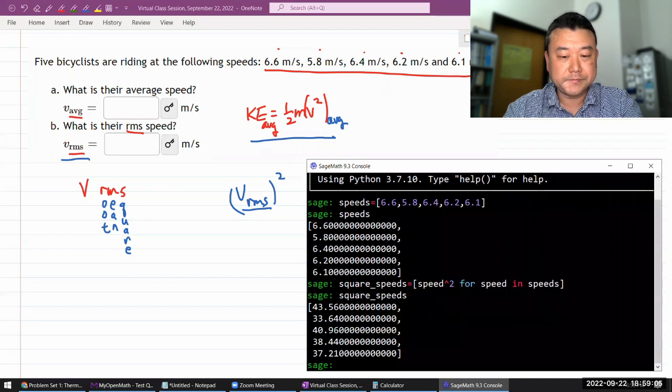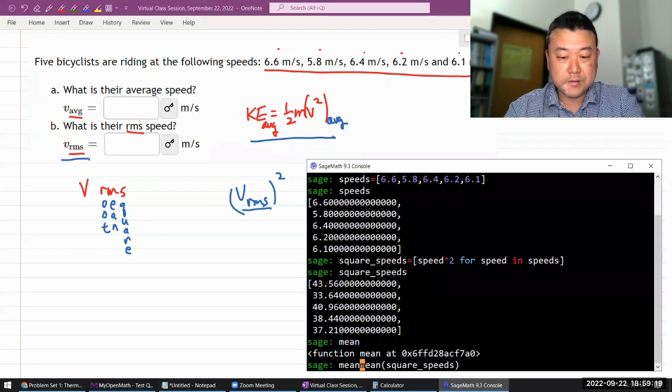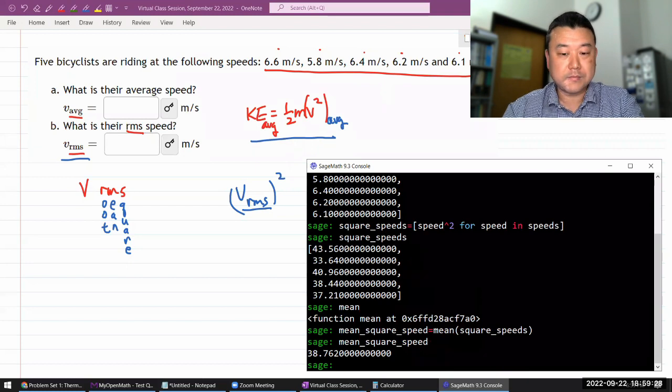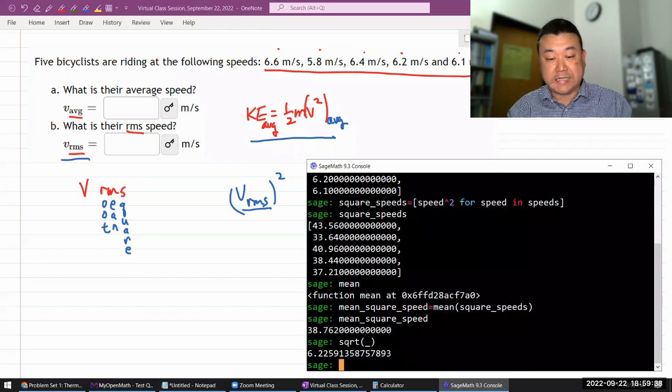Squared speed, okay, right. And mean speed, oh, so I can actually just, is there a function called mean? Okay, good. I can take the mean of squared speed. So that's mean square speed. Okay, that's the mean, and you take the square root of that. It's underscore previous input, yeah. So that's your V RMS, 6.226.